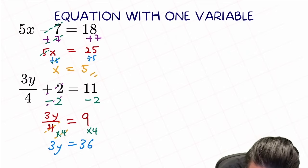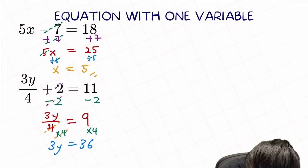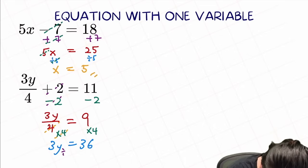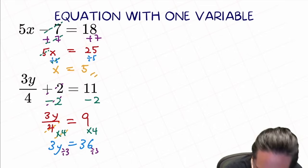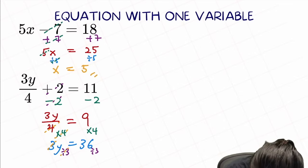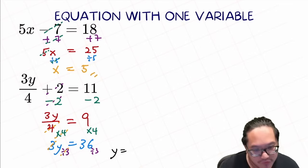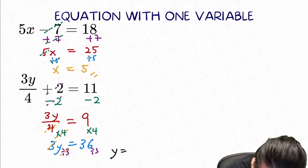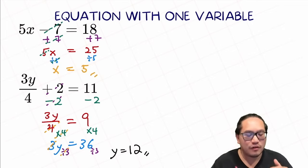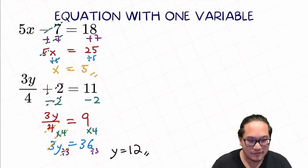We still have something connected to the y. The last thing we have is the 3. So how do we cancel that out? Divide by 3 on both sides. It will cause this 3 to cancel with the other 3. We're left with y equal to 36 divided by 3, equal to 12. Just like that — it's quite simple. It's just the same process over and over again to isolate the variable.